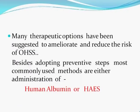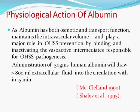There are many therapeutic options to ameliorate and reduce the risk of OHSS. Beside adopting all preventive steps, the most commonly used methods are human albumin or hydroxyethyl starch. Albumin has both osmotic and transport functions — it maintains intravascular volume and plays a major role in OHSS prevention by binding and inactivating the vasoactive intermediates responsible for the pathogenesis. Administering 50 grams of human albumin will draw more than 800 ml of extracellular fluid into the circulation within 15 minutes.